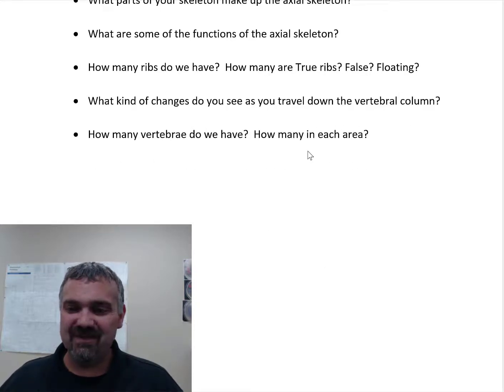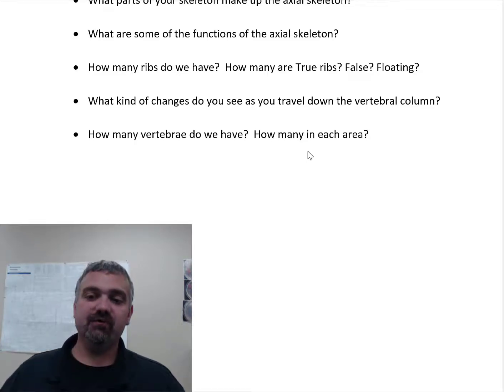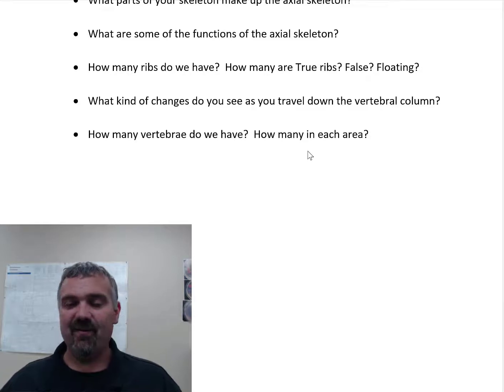All right, again, not a lot of questions here because this is all stuff I cover in other places, but how many ribs do we have? How many are true, false, and floating? So the average person, I don't want to say normal, but the average person has 12 pairs of ribs. How many are true ribs? That's going to be, we have 7 pairs of true ribs, so ribs 1 through 7, the reason they're called true ribs is they have a direct connection, they attach to the sternum.